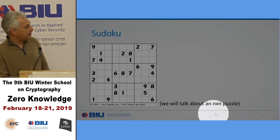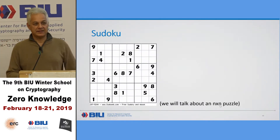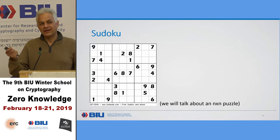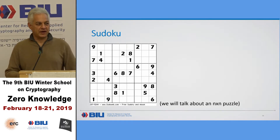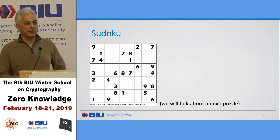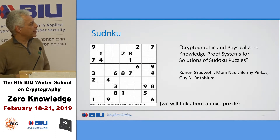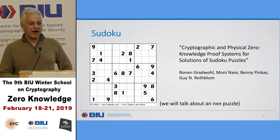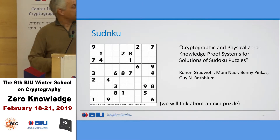In the general case, we'll talk about an N×N puzzle. In this case N is 9, and humans usually only work with N equals 9. So once Sudoku became very popular all over the world, then Monino came with the question: how can we do zero knowledge for Sudoku?